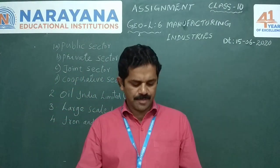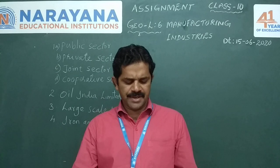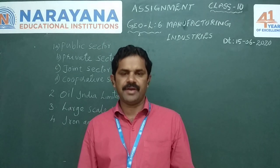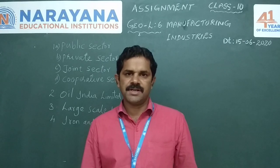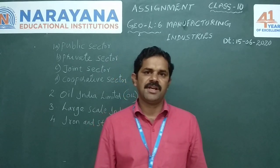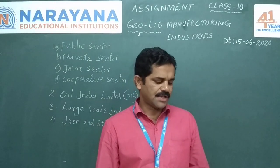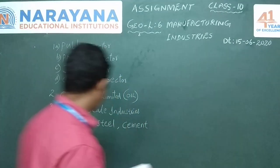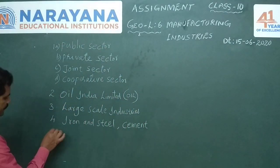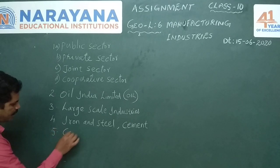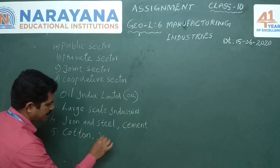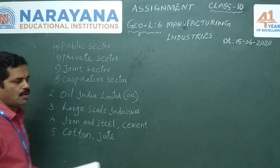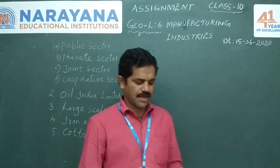Question number five: Mention any two agro-based industries. Agro-based industries are industries which get raw materials from agriculture. Two such agro-based industries are the cotton industry and the jute industry.